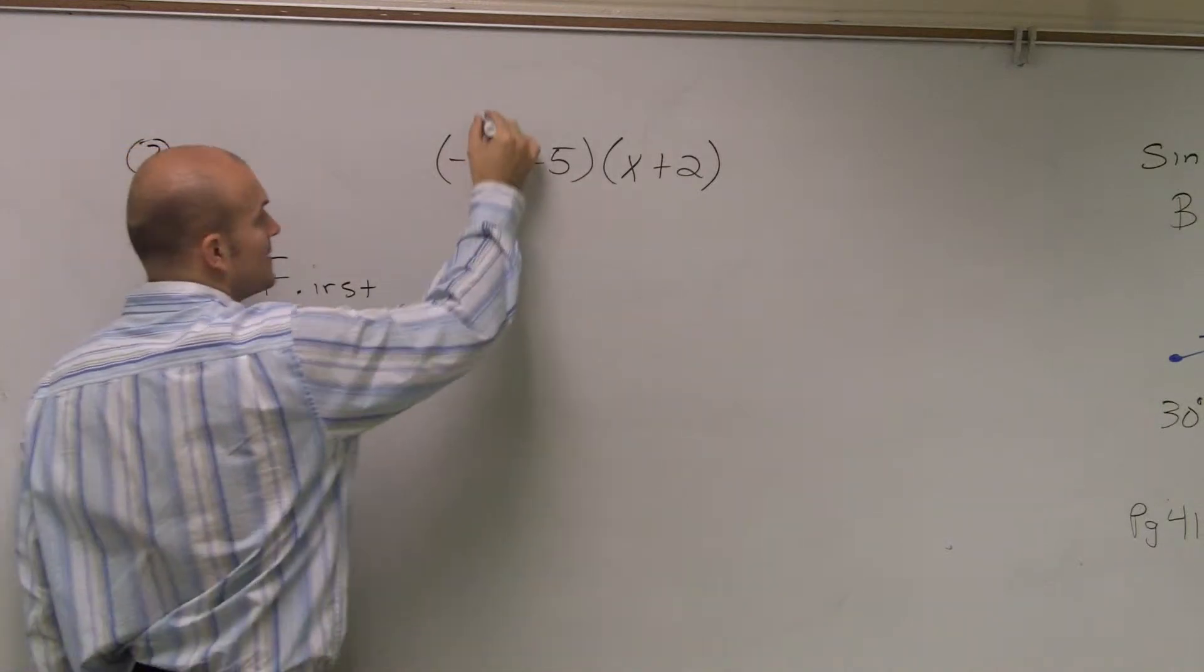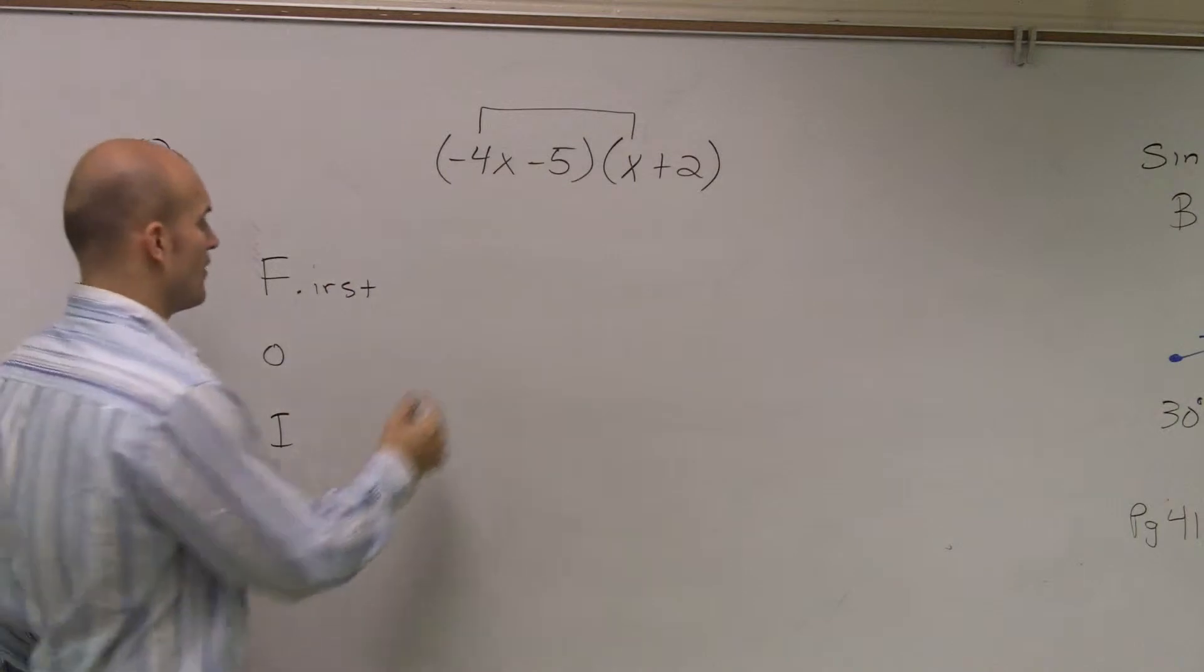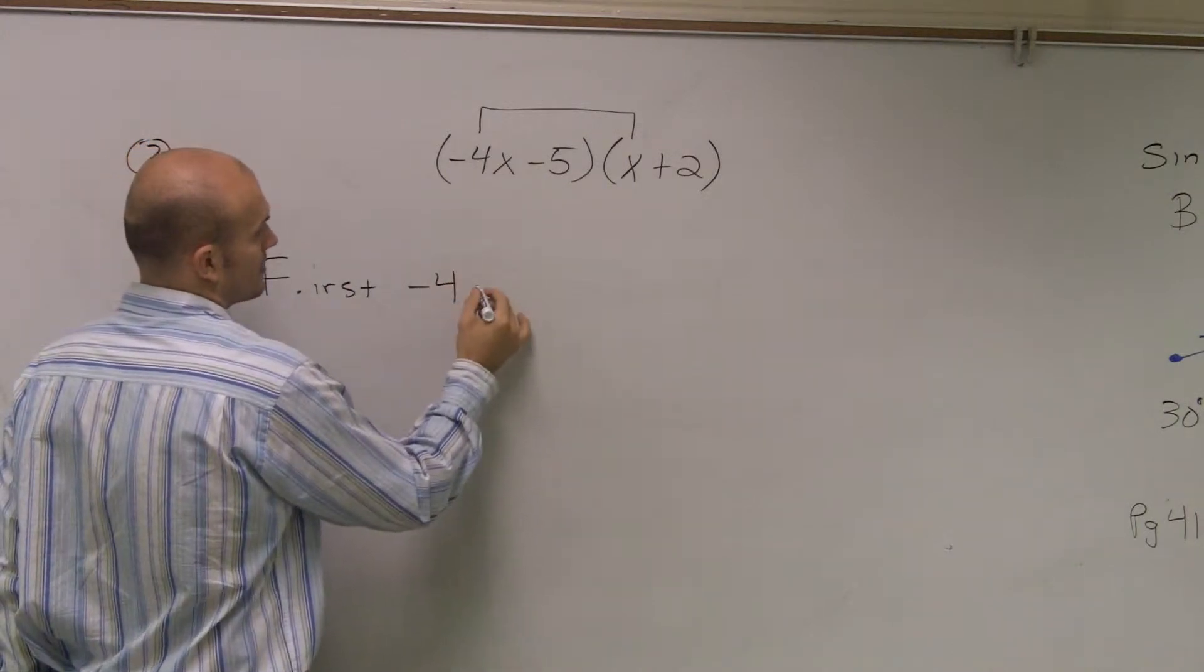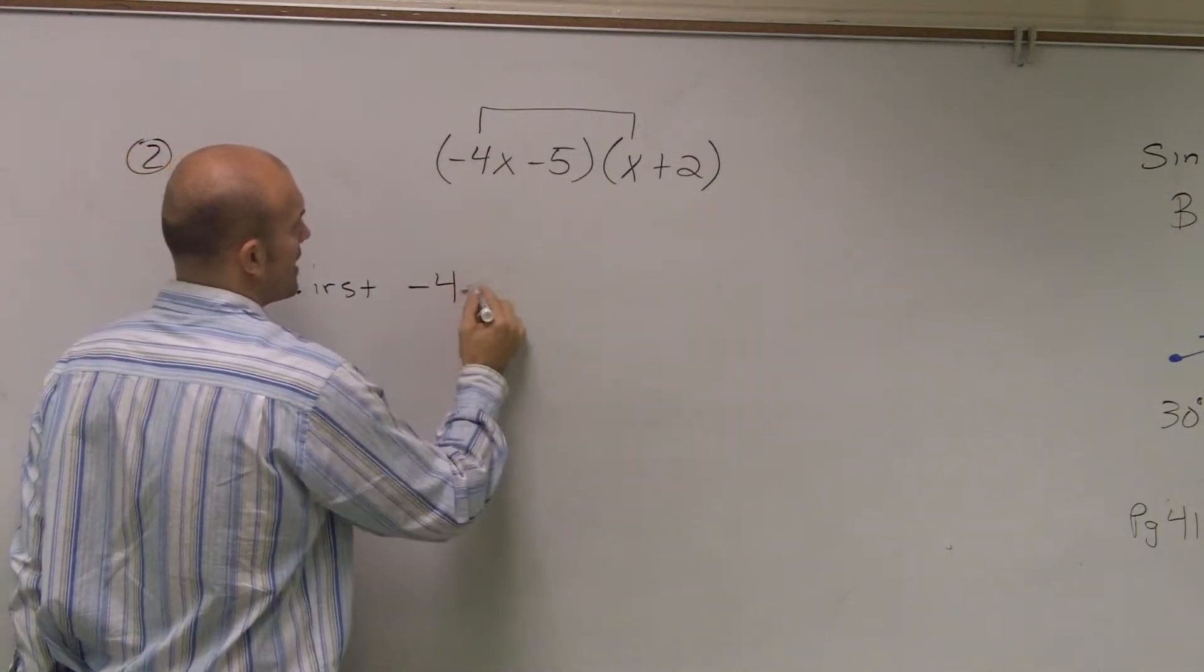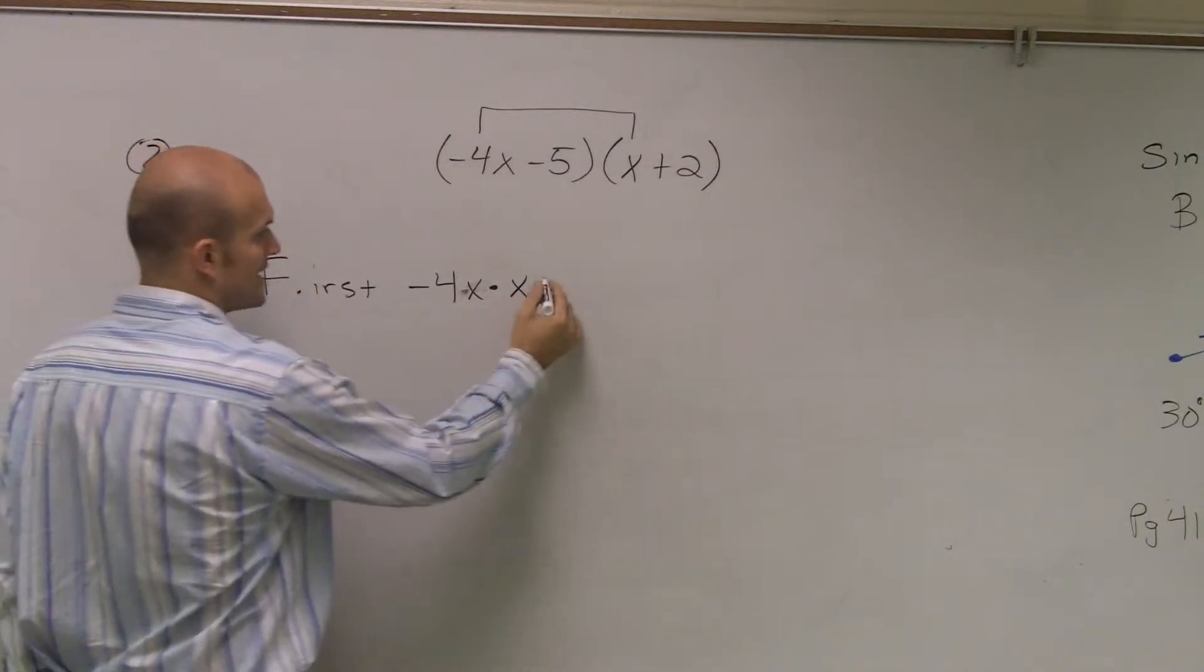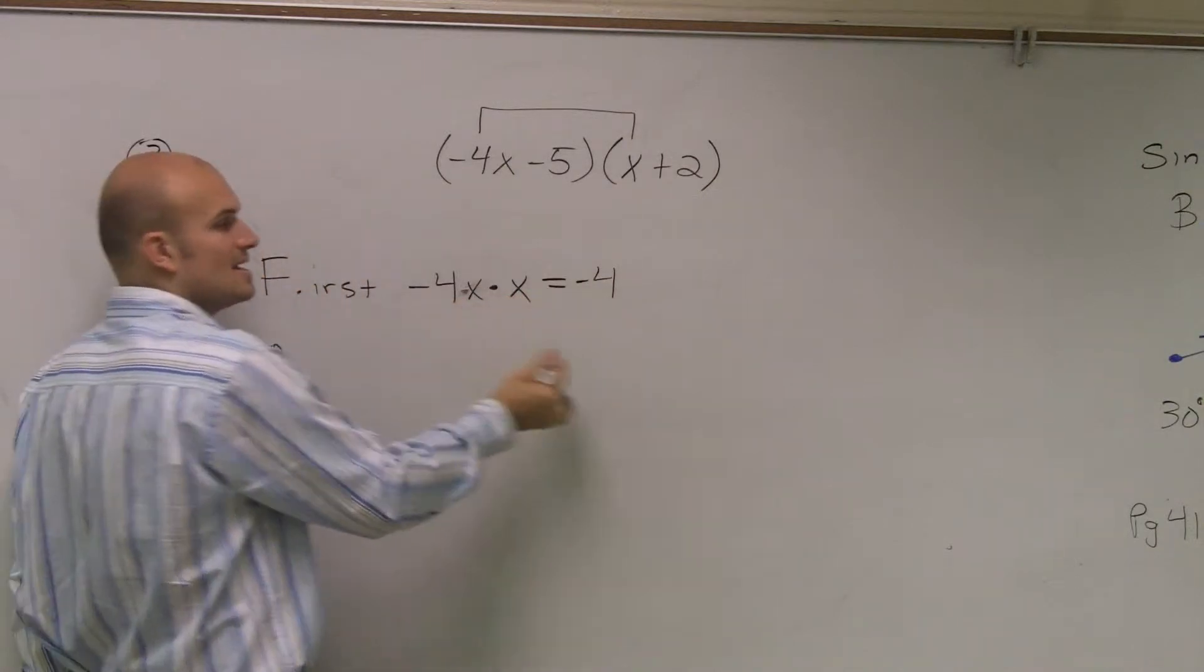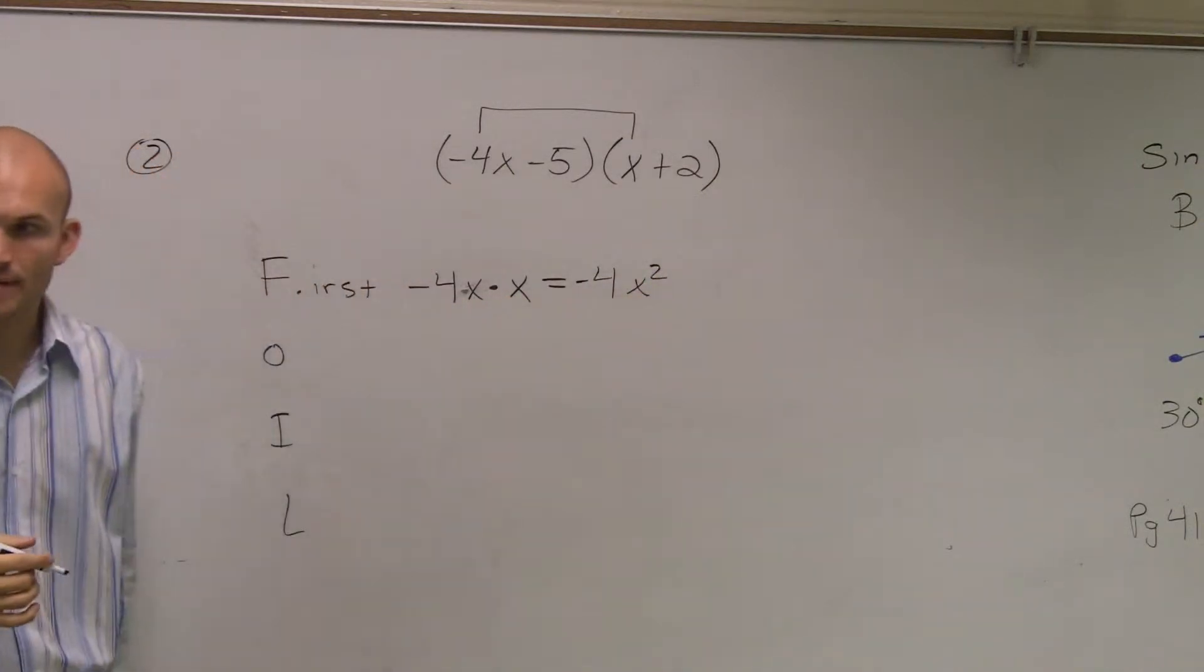So what I'm going to do is I'm going to multiply the first two terms. So you just do negative 4x times x. That's going to equal negative 4x². What happens when you multiply x times x? x squared.